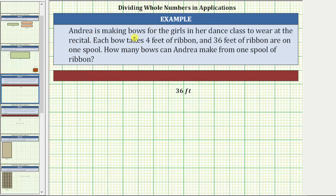In the first example, Andrea is making bows for the girls in her dance class to wear at the recital. Each bow takes four feet of ribbon and 36 feet of ribbon are on one spool. How many bows can Andrea make from one spool of ribbon?